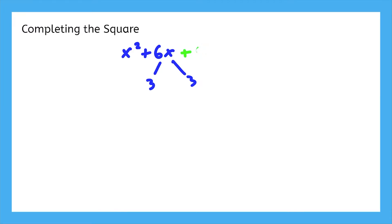3 times 3 would be 9. We made that constant just right so that it could be factored into a squared binomial. This is what completing the square means, manipulating the expression so that it's a perfect square trinomial and can thus be factored into a squared binomial.